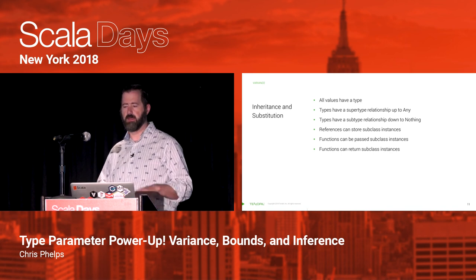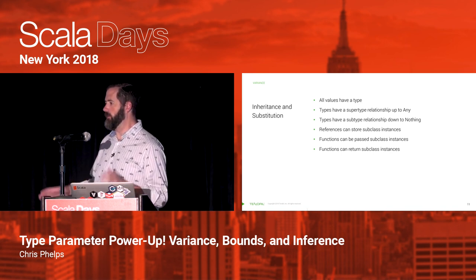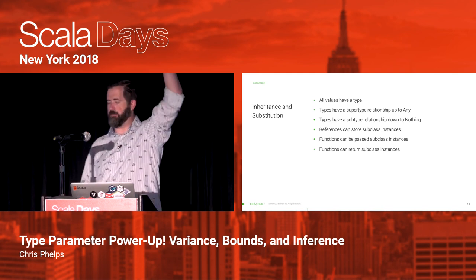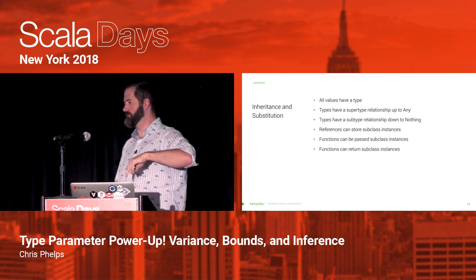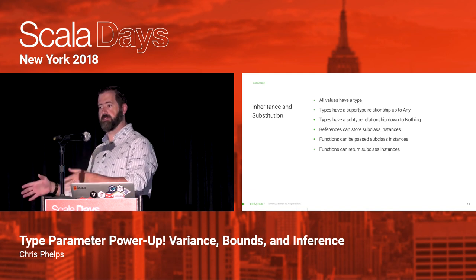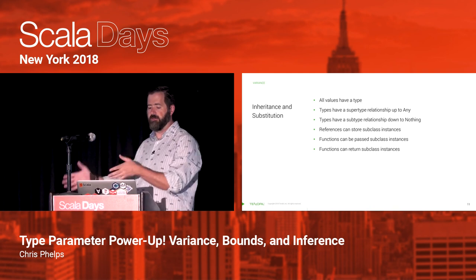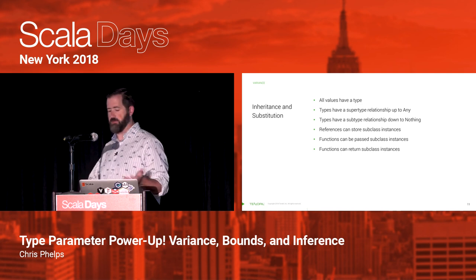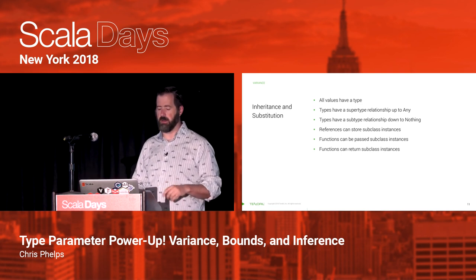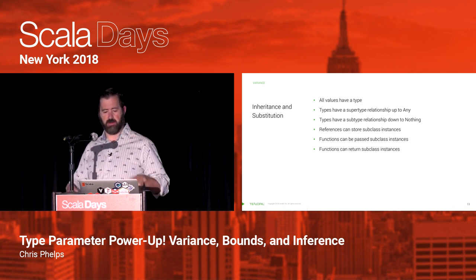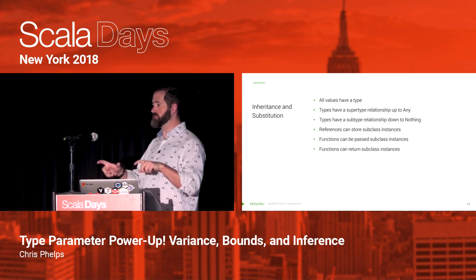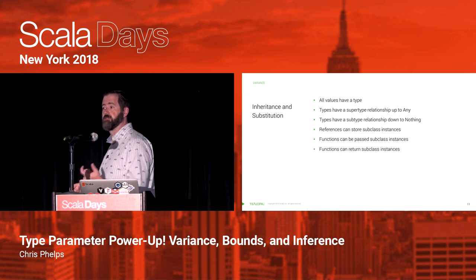Inheritance and substitution through inheritance. In Scala, all values have a type. Types have superclass relationships that go up to a top class Any. They also have a subtype relationship that goes down to a bottom type Nothing. A reference with a given type can store instances of that type or instances of subclasses of that type. Functions can be passed instances of the type they expect or subclasses of the type they expect. Functions return subclass instances — so if a function tells you it can return an AnyVal, it can really return you an Int because an Int can still be treated as an AnyVal.